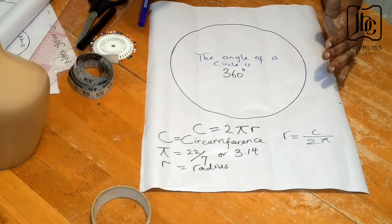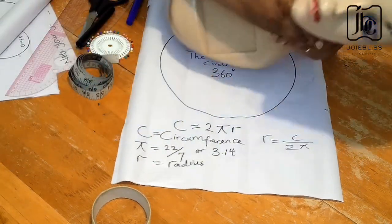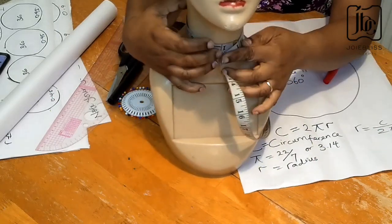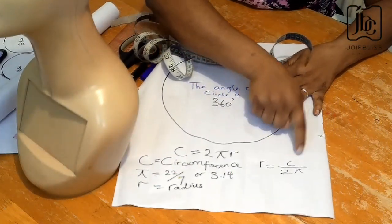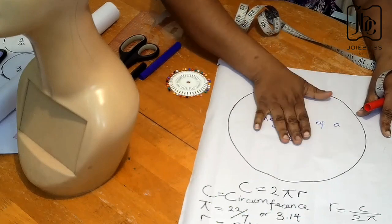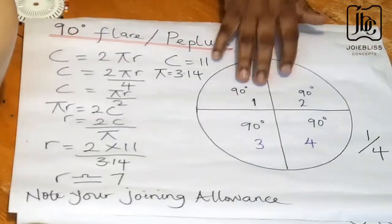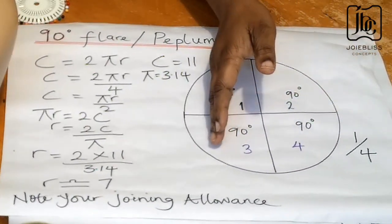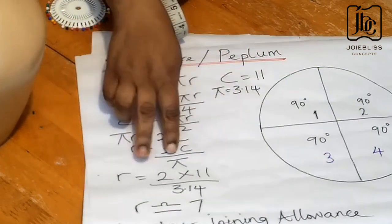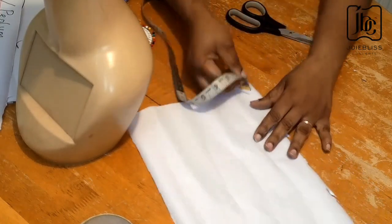Flares originate from a circle, and the angle of a circle is 360 degrees. The circumference of a circle is 2πr, where π is 22/7 and r is the radius. I'll be using the neck of this mannequin as my waist measurement — the round neck measurement is about 11 inches — which I'll be using to cut out all the flares. For a 90-degree flare, the formula gives r = 2c/π, where c is 11 inches.